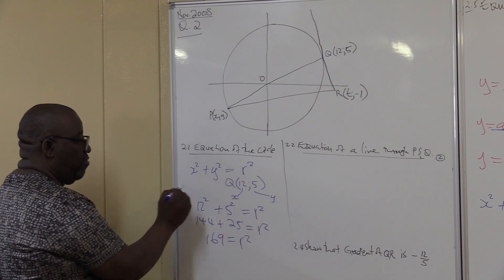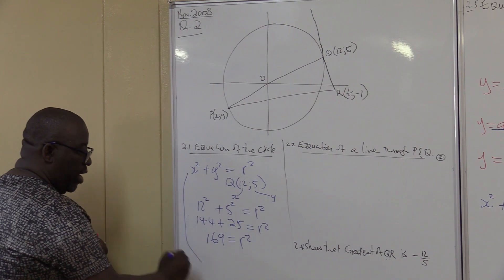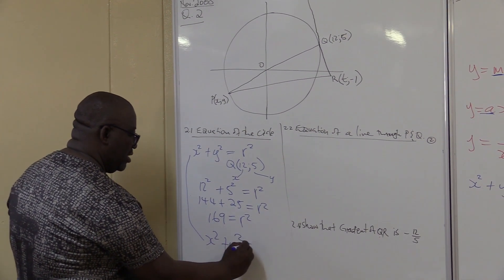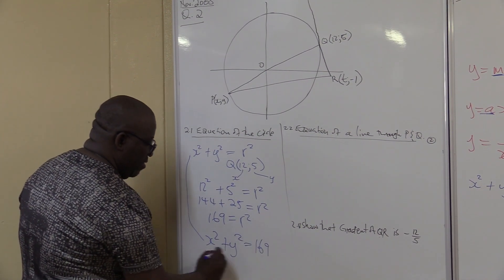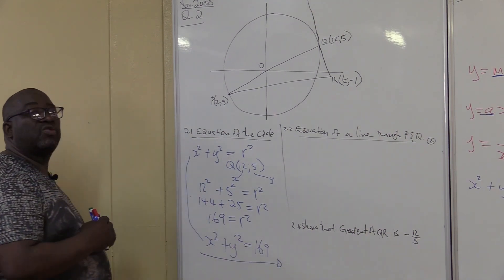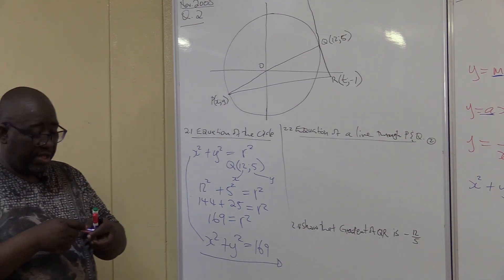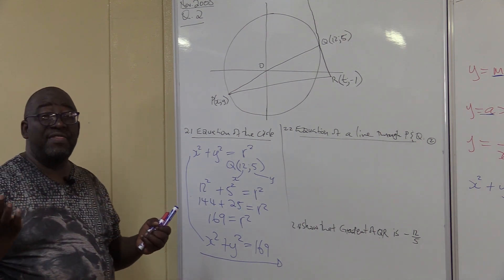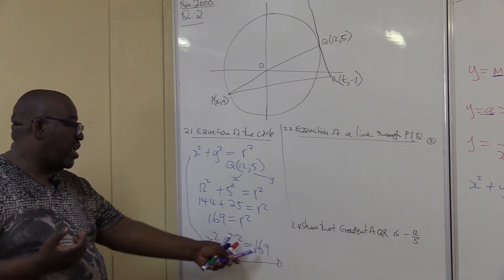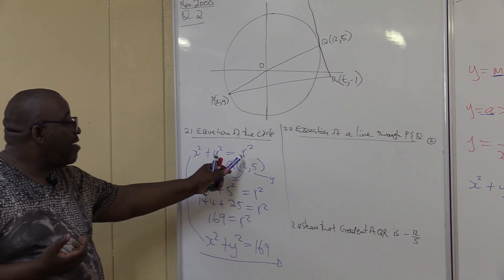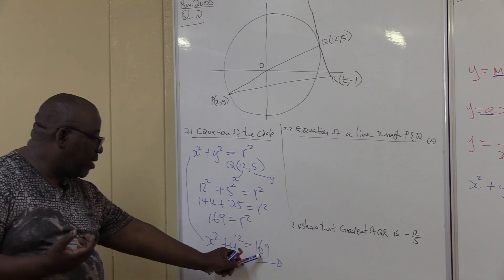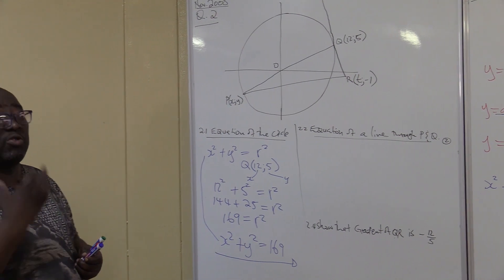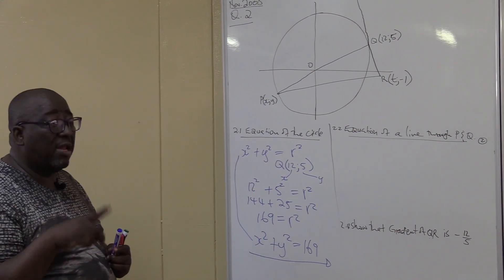Remember, we are not looking for r — we are looking for r squared, which is the whole equation. So x² + y² = 169. This is the equation. The question did not say find the radius; it says find the equation. So we keep it as r squared — you don't need to take the square root of 169.